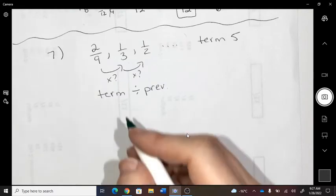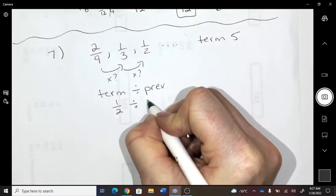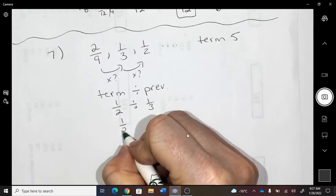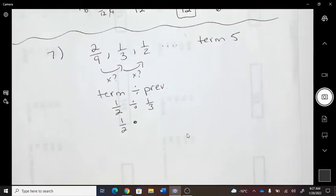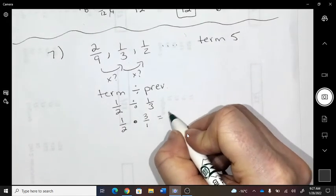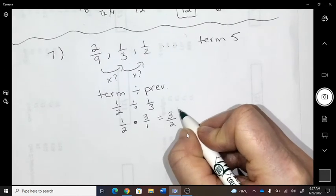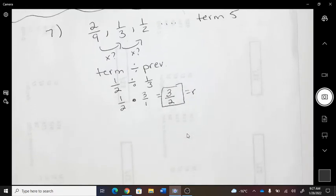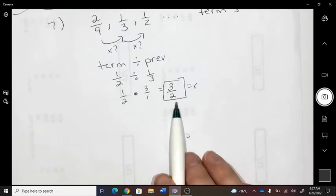Okay, so I'm going to go one-half divided by one-third. I took any term dividing by its previous. Then, what do I do with dividing fractions? I flip and multiply when I divide. Okay, so now I have that R value. What's the common multiplier? That's the common multiplier.